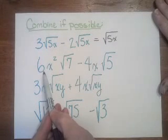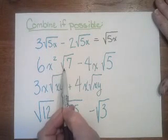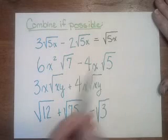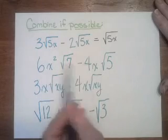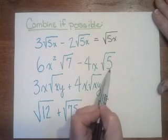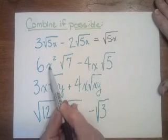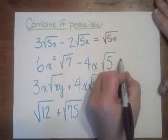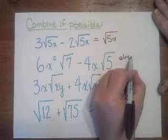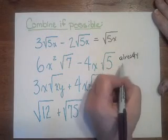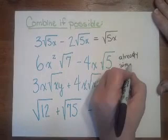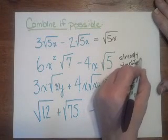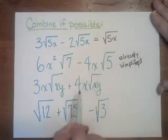Let's look at this one. I have 6x² times the square root of 7 minus 4x times the square root of 5. This is not like in more than one way. Not only do I not have the same root underneath, but I also have different variables. Well, they're the same variable but at different powers. So this one is what I would call already simplified. Your book probably says not possible.